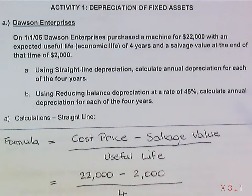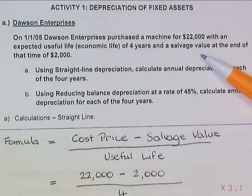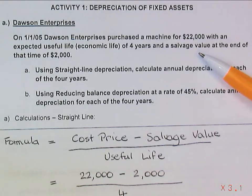That machine had an expected useful life — otherwise known as economic life — of 4 years, and a salvage value at the end of that time of $2,000. The salvage value is basically our estimate of what we can get for that machine on the open market if we sell it at the end of 4 years.